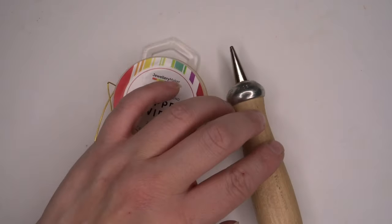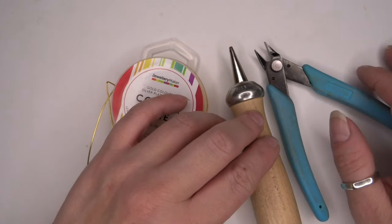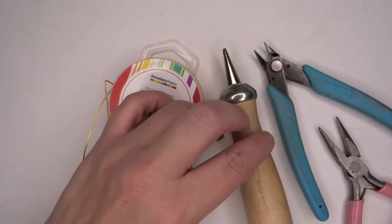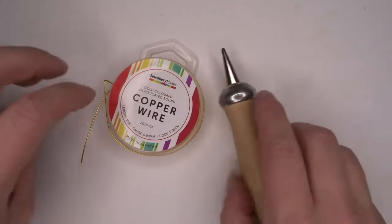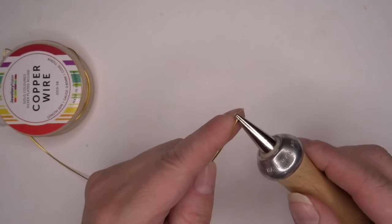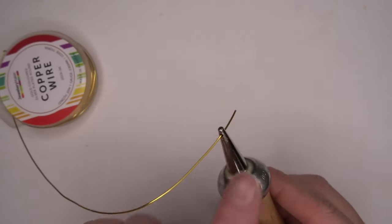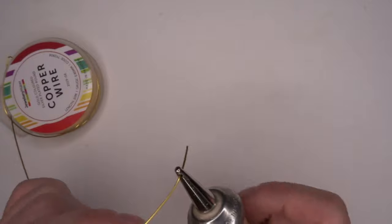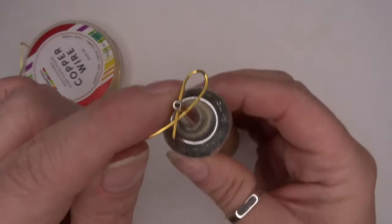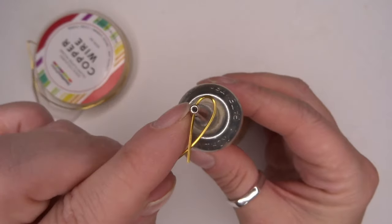We'll also use a wax comb, our flush cutters, and perhaps our chain nose pliers. To start off with, we're going to take our wire, keep it on the reel, and pop the wire through the little inlet at the top. Then bring that around so we have a little loop on the top there like so.